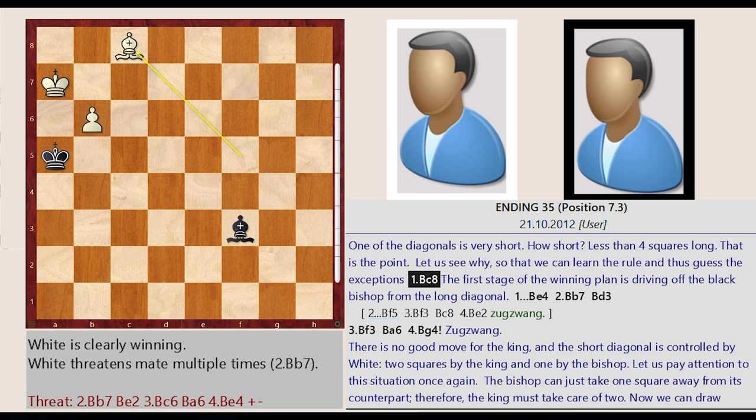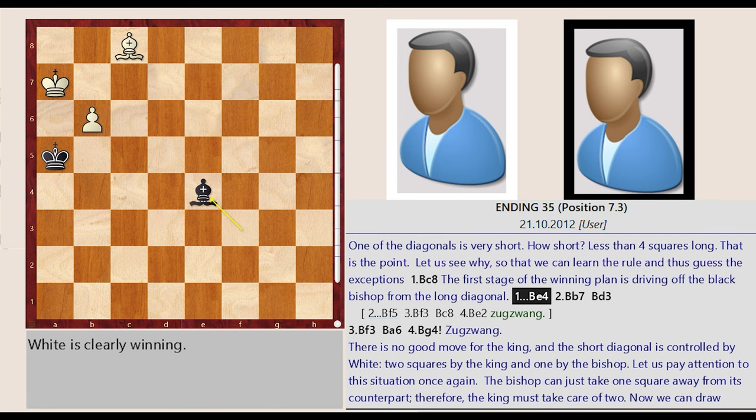Bishop F5 C8. The first stage of the winning plan is driving off the black bishop from the long diagonal. Bishop F3 E4. Bishop C8 B7.